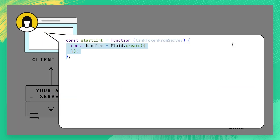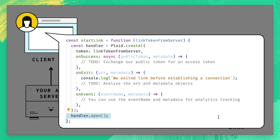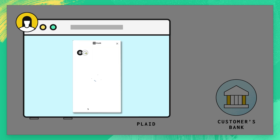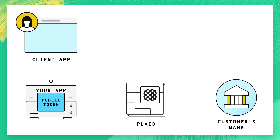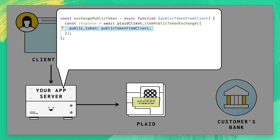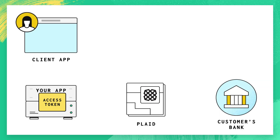From there you can use Plaid's client-side library to initialize Link. You'll pass in the Link token along with some methods to call when the user successfully completes Link or exits out early. Once you've done that, you can open up Link to start the connection process. Your user will sign into their bank, select what accounts they want to share, and possibly perform other setup steps depending on the products you're using. When your user is done connecting, you'll get back a public token — a short-lived single-use token that your client sends to your server, where you can exchange it for an access token by calling item public token exchange. You'll get back a persistent access token, which you should save on your server and use whenever you need to request data from a financial institution on behalf of a specific user.